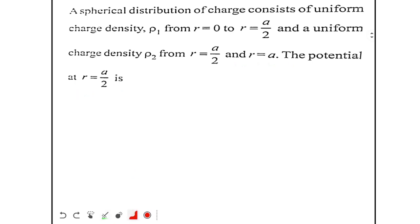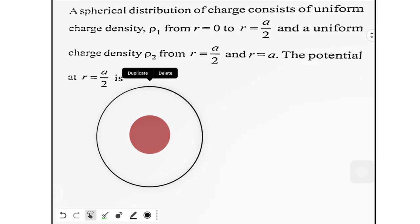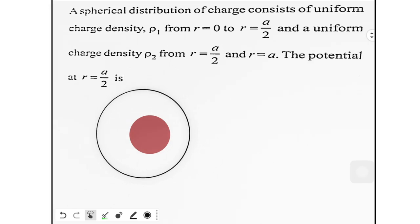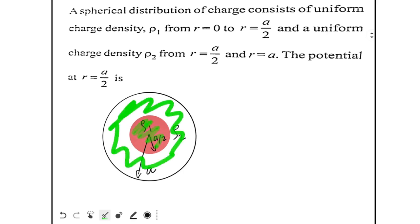So there are two spheres — an inner sphere and an outer sphere. The inner radius is a/2 and the outer radius is a. In the inner sphere, charge density is ρ1, and in the shell region between the two spheres, charge density is ρ2.